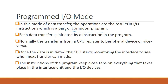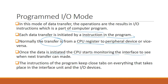Each data transfer is initiated by an instruction which is part of a program. Normally, the data transfer occurs between CPU registers and peripheral devices, and vice versa — from CPU registers to peripheral devices and from peripheral devices to CPU registers. Once the data transfer is initiated, the CPU starts monitoring the interface to see when the next transfer can be made.